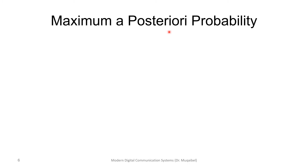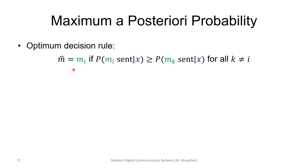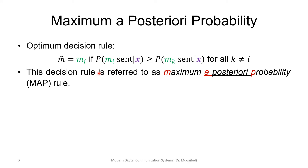We can define the a posteriori probability — the Maximum A Posteriori probability. The decision rule is: choose estimate M equal to Mi if the probability of Mi given X is greater than for any other M. You want to choose M such that you always get the maximum possible probability — you want to maximize this. This decision rule is referred to as Maximum A Posteriori Probability, abbreviated MAP. We call it a posteriori because we have already observed X at the receiver side. The first letters give us the MAP decoder or MAP rule — you maximize the probability after receiving X.